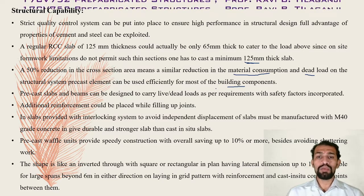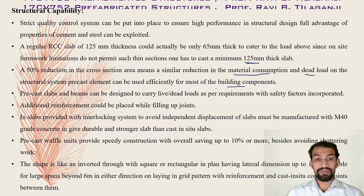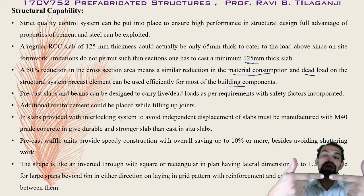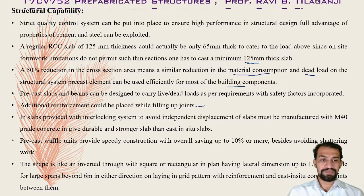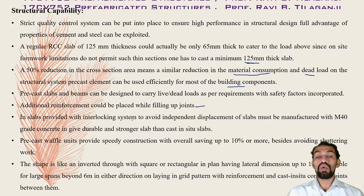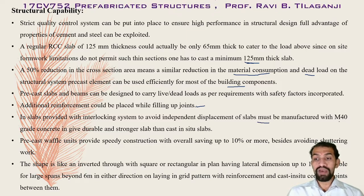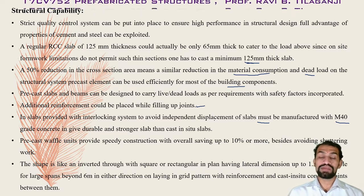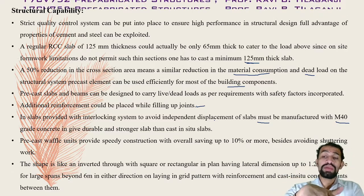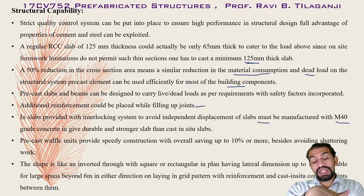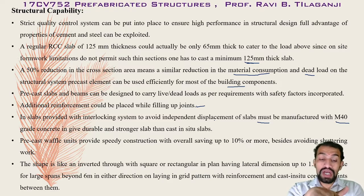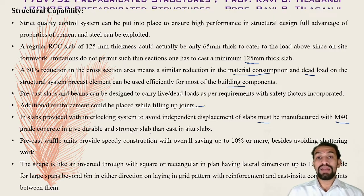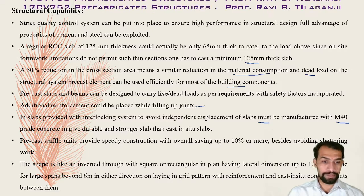Additional reinforcement could be placed while filling up the joints between precast panels, and the slab can be cast with an interlocking system to avoid independent displacement of individual slab panels. The slabs must be manufactured with M40 grade concrete, giving a more durable and stronger slab than cast-in-situ slabs.